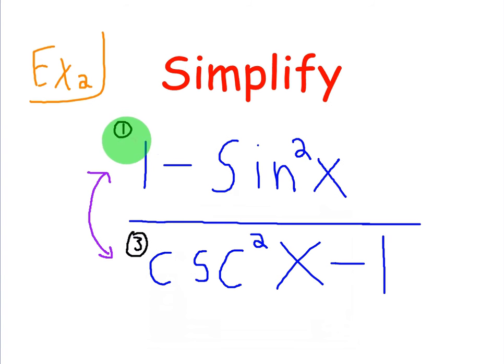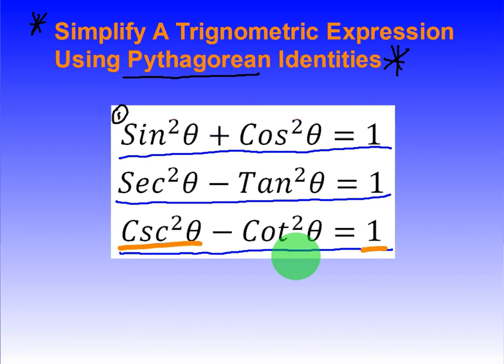Now I've gone ahead and labeled the top as 1 and the bottom as 3 because the top looks a whole lot like the first Pythagorean identity that we learned, namely sine squared plus cosine squared equals 1. It doesn't have a cosine squared in it, but it does have a sine squared and a 1 in it.